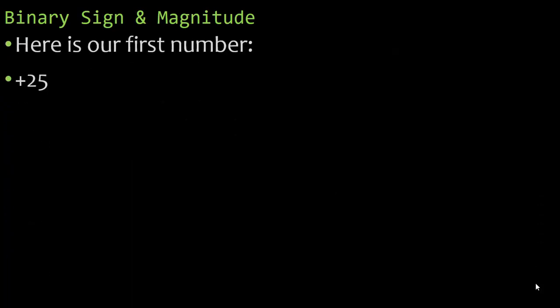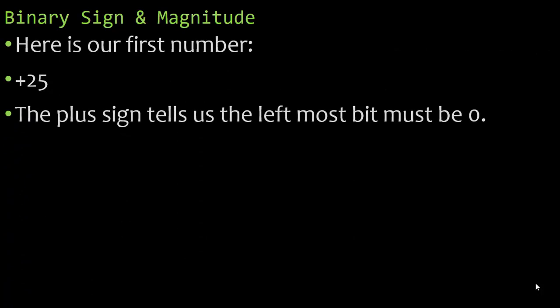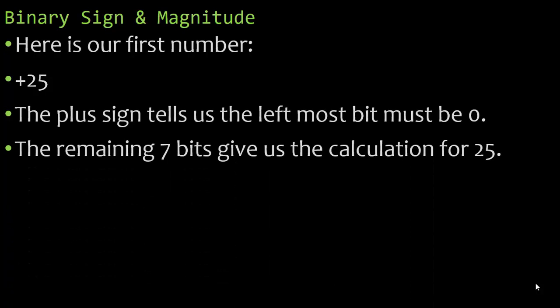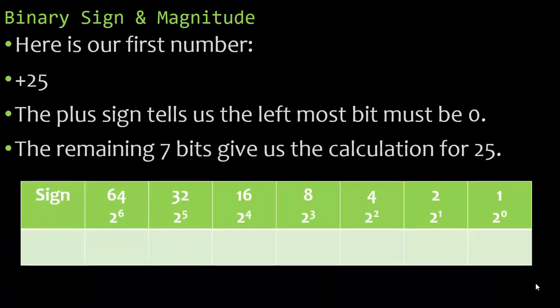Let's look at an example using eight bits. Here is our first number, positive 25. The plus sign tells us the leftmost bit must be a zero. The remaining seven bits give us the calculation for the number 25. So here I have an eight bit chart here just for visual representation. I know that we have a positive sign, so I know right away this is a zero. And I'm looking for the value of 25. Can I use the value of 64 to get me to 25? I cannot. What about the value of 32? Nope. Can I use the value of 16 to help me get to 25? I sure can. So I'm going to put a one here so I know I used it. 25 minus 16.